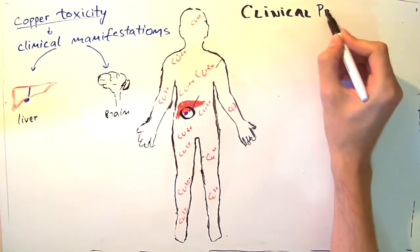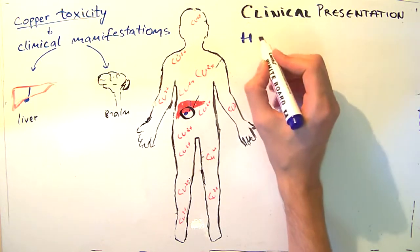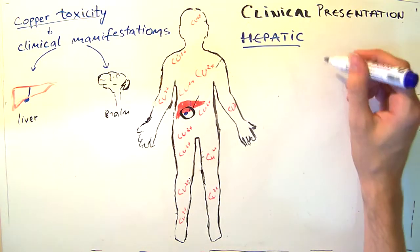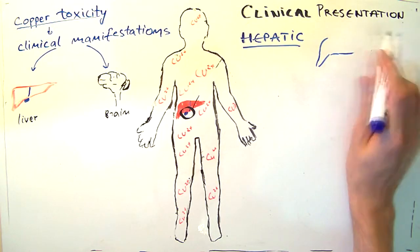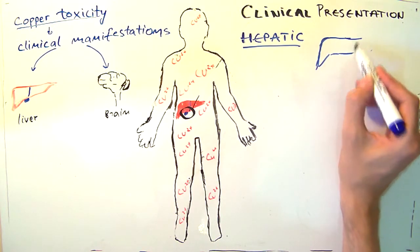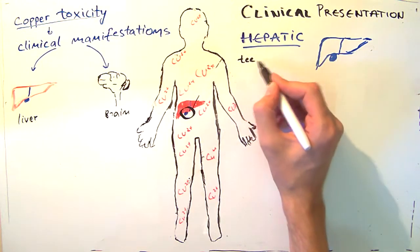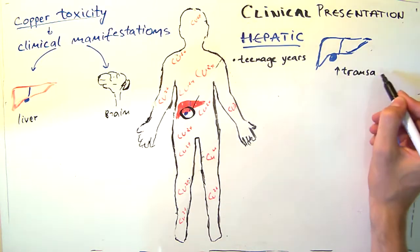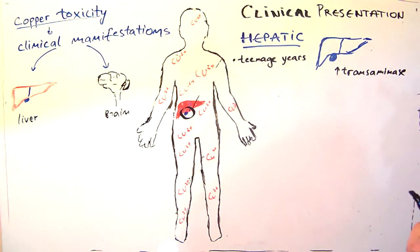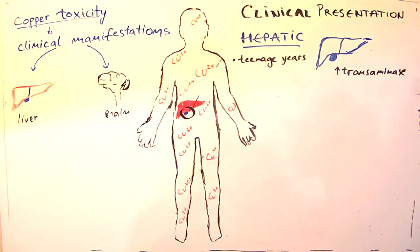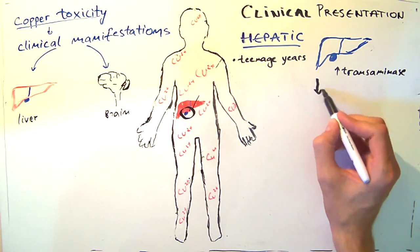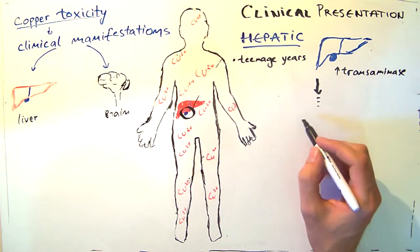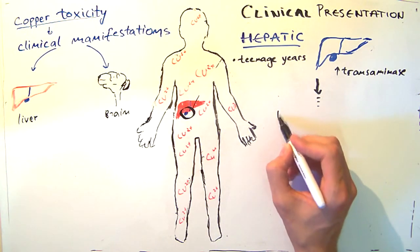Now let's move on to the clinical presentation. First, we are going to talk about the hepatic presentation. Wilson's disease might present as hepatitis, cirrhosis, or as liver decompensation. The symptoms usually start in the mid-teenage years. If it starts to present as hepatitis, there might be elevated levels of liver enzymes in the blood, with or without jaundice, and then spontaneously regress. But it might also reoccur, and most of these patients with recurring hepatitis usually develop cirrhosis.